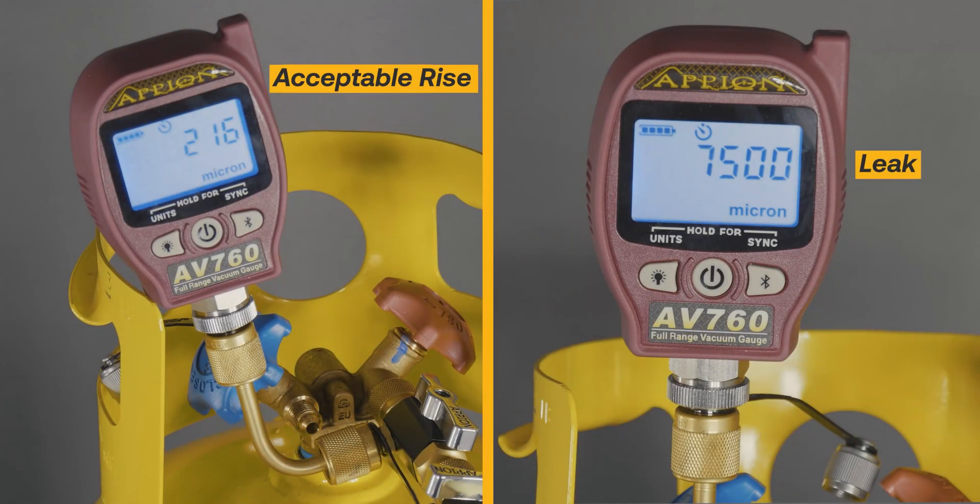When we compare an acceptable rise to a leak in the setup, you will see that the acceptable rise will be slow and over time will equalize. A leak will show a rise all the way back to atmosphere.